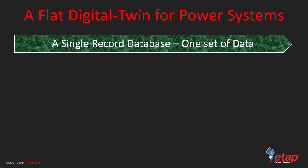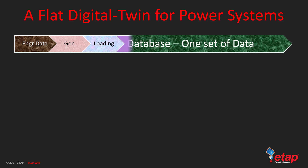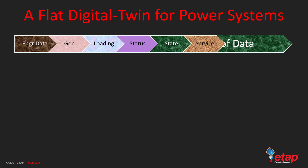Let me start with a flat digital twin platform for Power System — a single record database with one set of data. A Power System database consists of engineering data, generation values, loading values, the status of the equipment, the state of the equipment, service conditions of the equipment, the view and visualization, and also analysis.